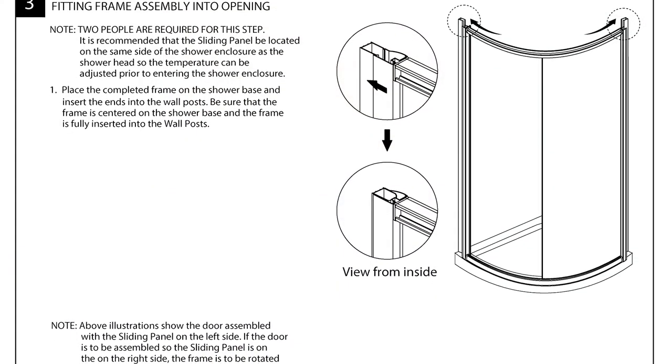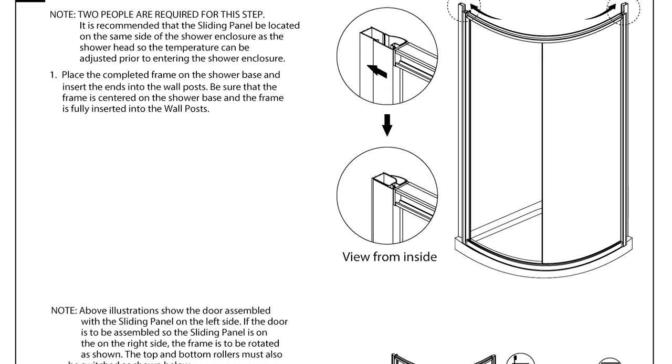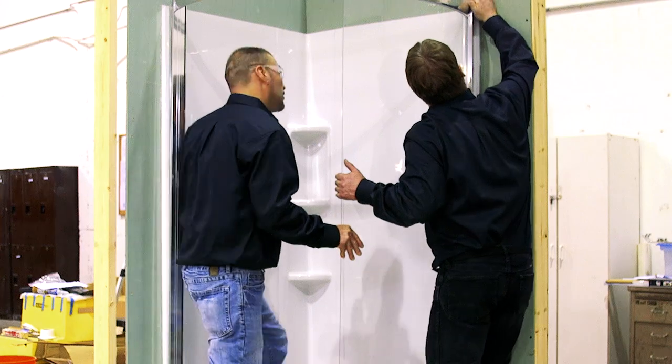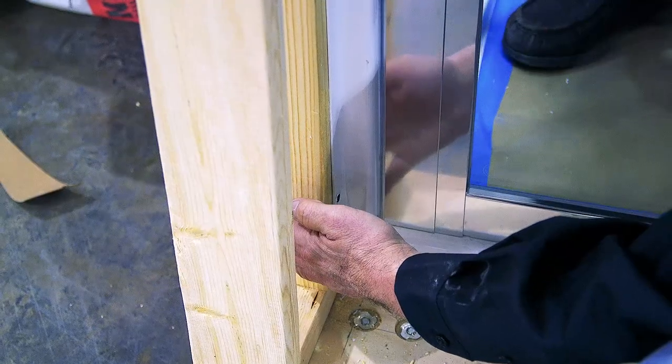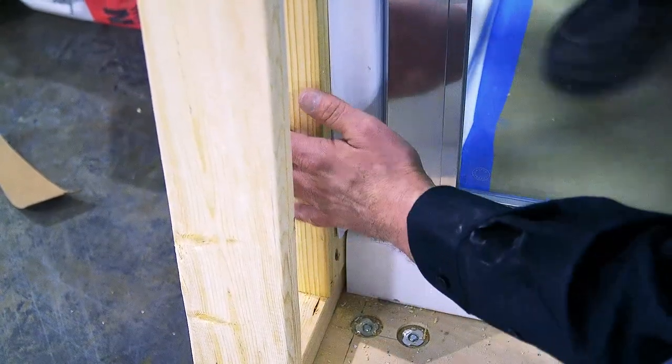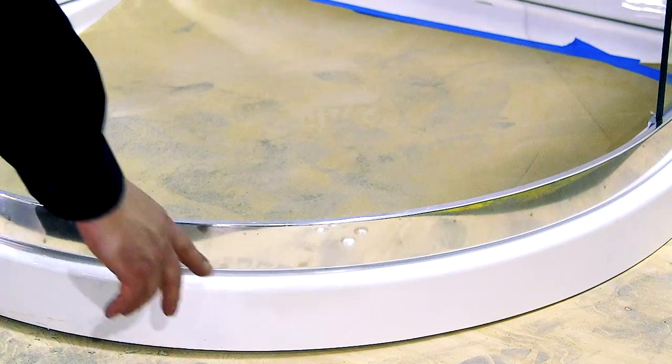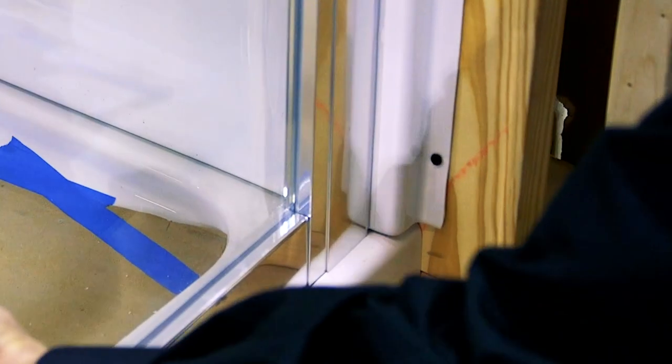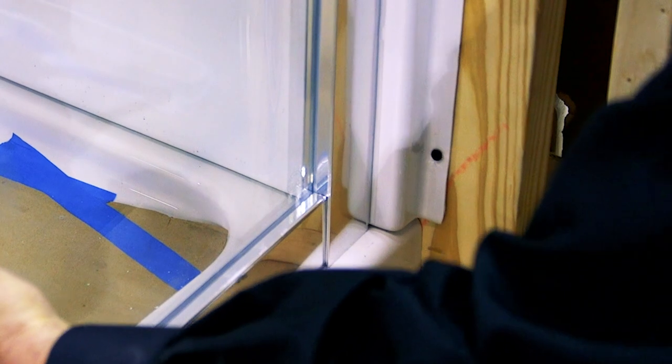Section 3: fitting the frame assembly into the shower opening. Two people are needed to accomplish these steps successfully. Place the completed frame on the shower base and insert the ends into the wall posts. Be sure that the frame is centered on the shower base and that the frame is fully inserted into the wall posts.